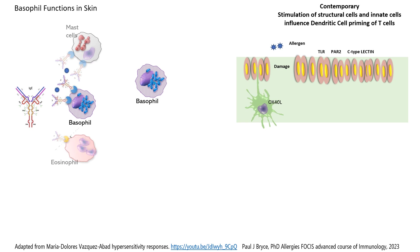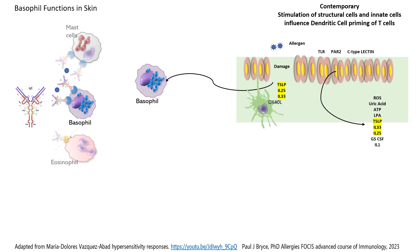When you have an allergen and there's damage produced on the surface of the cell, we have activation of the epithelium and production of several different mediators. TSLP, interleukin-25, and interleukin-33 activate basophils — even if they're not activated by IgE — and then they produce interleukin-5, which will target eosinophils.